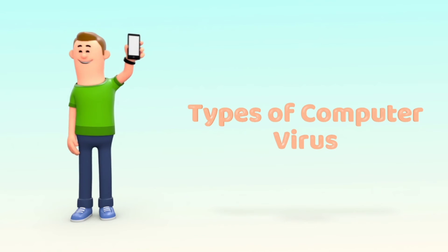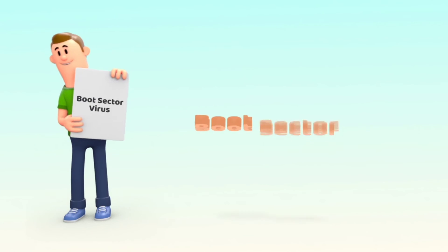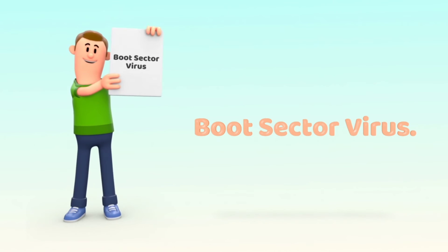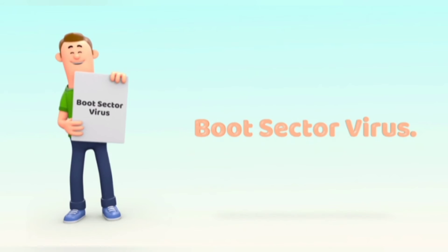Let's talk about types of computer viruses. Broadly, there are two types: boot sector virus and program file virus. When we boot our computer, it loads the operating system. Instructions on how to load the operating system are stored on a special section on the storage drive called the boot sector. A boot sector virus infects the boot sector and adds its code there. Thus, every time we boot our computer, the virus also loads itself into memory and then starts infecting other programs and files.